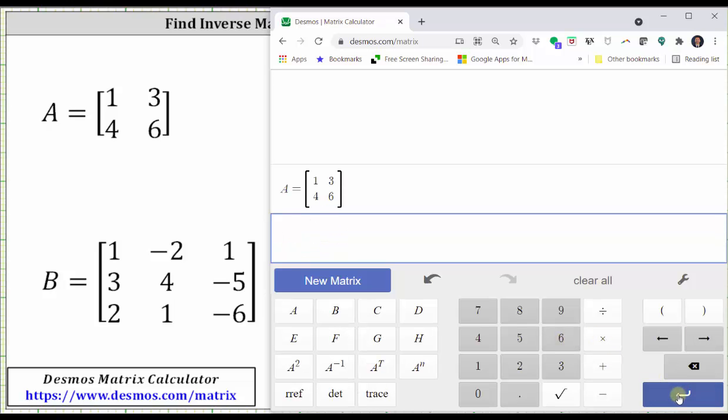And now to find the inverse of matrix A, we simply click matrix A and then the inverse key, which is this key here. Looking at the right, we do have the inverse of matrix A. Notice how it's in decimal form. To convert to fraction form, we click the convert to fraction button on the far right.